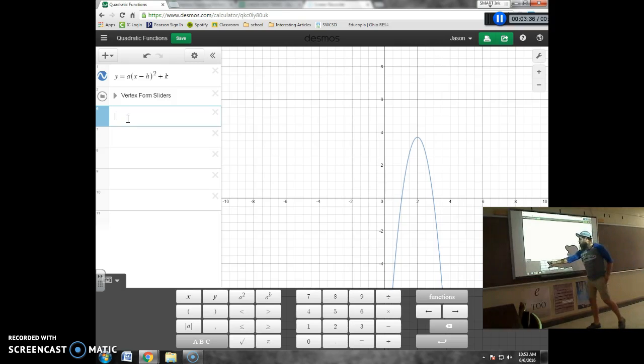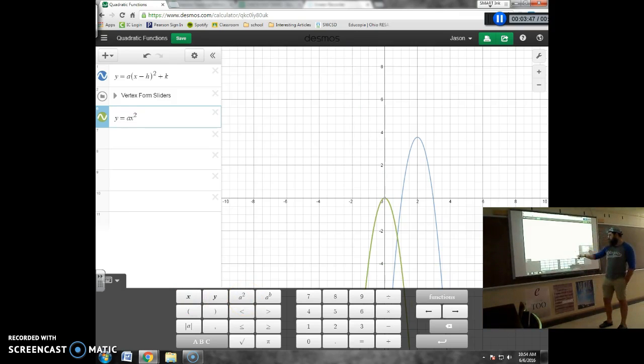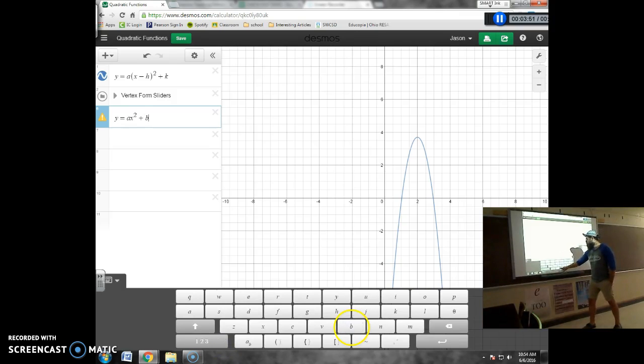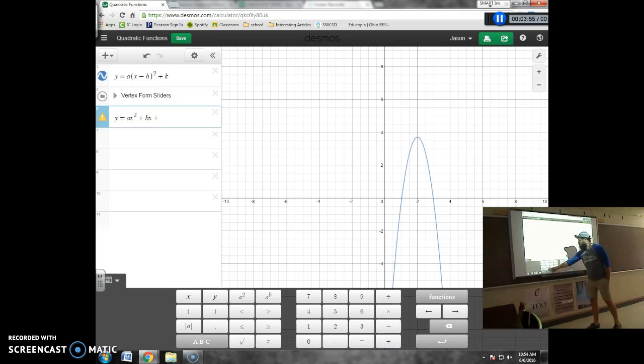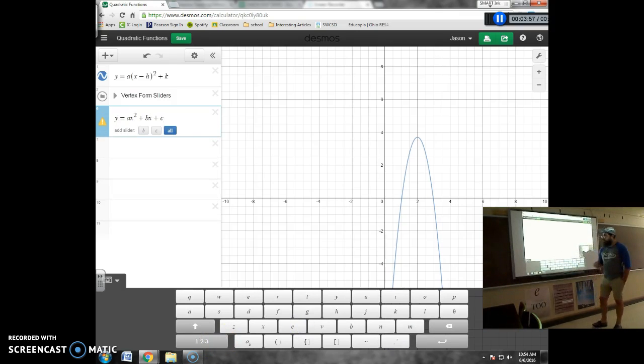Next, we're going to type in y equals. We need another a, so we're going to do a. Our x squared comes next. So here's where we get that x squared term. x squared plus bx plus c. Our next form is y equals ax squared plus bx plus c. We're going to add sliders.